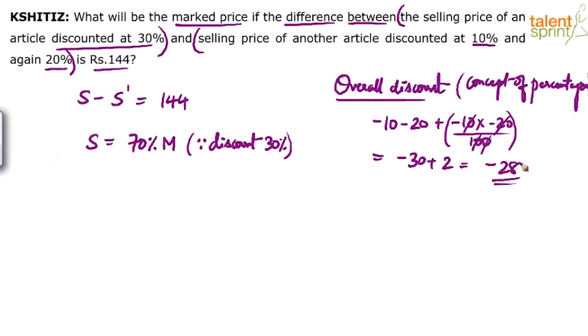So basically the discount is 28%, which means in the second case the selling price S dash is going to be 72% of the mark price. Since the discount is 28%, that's it, you are done. In the first case there is a straight discount of 30%. In the second case there is a compounded discount. You give a 10% discount, again negotiate and give another 20% discount, which leads to overall 28% discount.